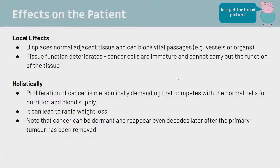Why is cancer actually bad? Essentially, because the cells are proliferating so much they have a really high metabolic demand. They're going to take a lot of nutrients from other cell types that need them - that's also why a lot of people who have cancer have a lot of weight loss. Cancer can damage other tissue and often invade into other tissues, blocking their function. It can block ducts, blood vessels, cause necrosis, block your intestines causing buildup, block blood supply, and block waste excretion. It steals nutrients from other parts of the body.